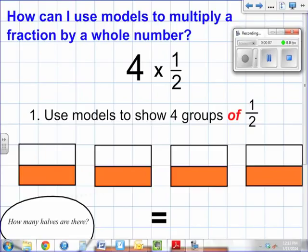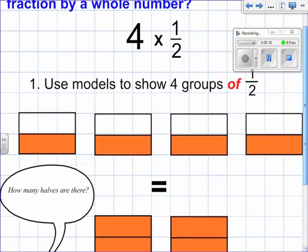To do that, first off, we're going to be modeling the following problem. We have four times one-half. So we're going to model using four groups of one-half. As you can see in front of you, you have one-half appearing four times.